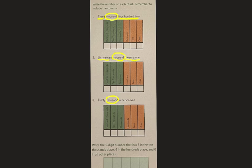Then at the very bottom it says write the five-digit number that has three in the ten thousands place, four in the hundreds place, and zero in all the other places.